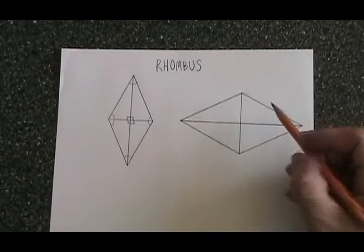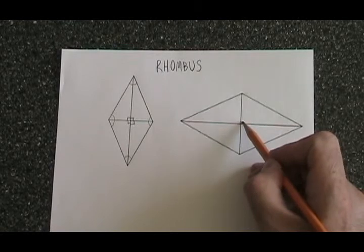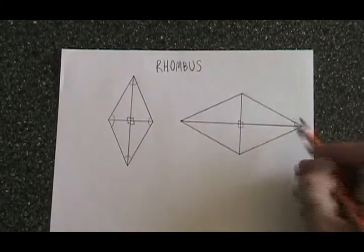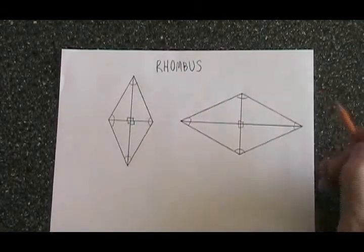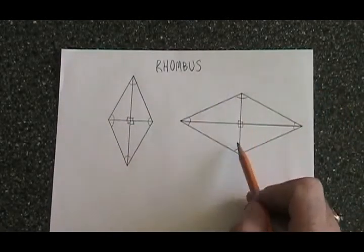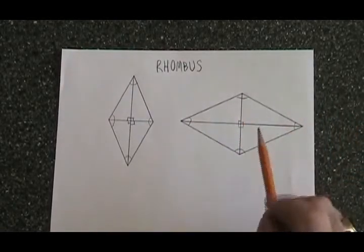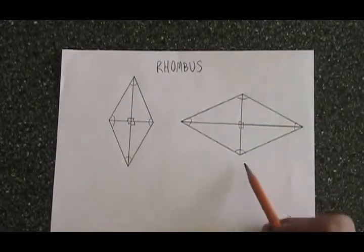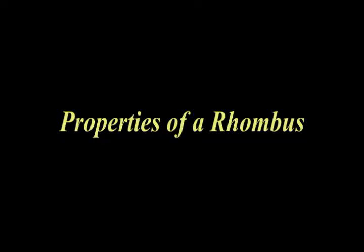So to review: in this rhombus, the angles in the middle all have to be 90 degree angles. The angles on the outside have to add up to 360 degrees. The diagonals cross each other at right angles, but the diagonals are not equal in length, and the sides are all equal in length.